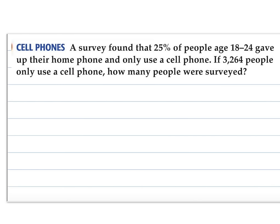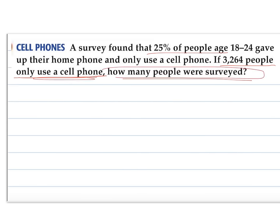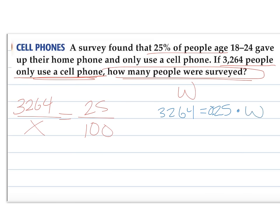Okay, so we have some information here. We have 25% of people, 18 to 24, gave up their home phone and only used a cell phone. If this many people only used a cell phone, how many people were surveyed? So it looks like we're given our part. We're given the number of people that voted that way. We're wondering how many people were surveyed. So our whole number, so we're looking for our whole of people. We know that 25% of them, which this is 25% of how many people picked that. So that's the percent proportion version, or we can say 3,264 is 25% of what number of people surveyed. Those are the two options.